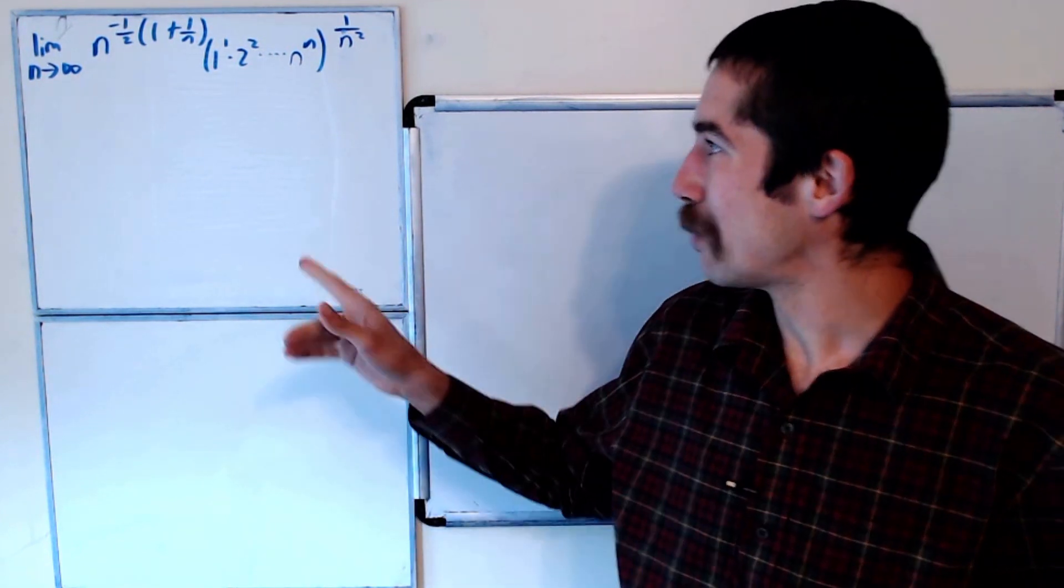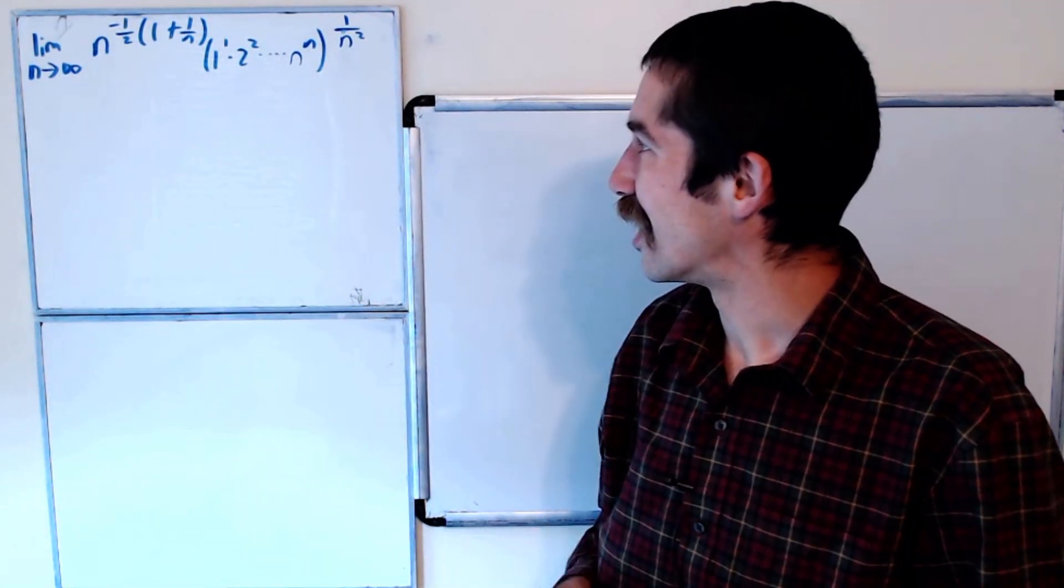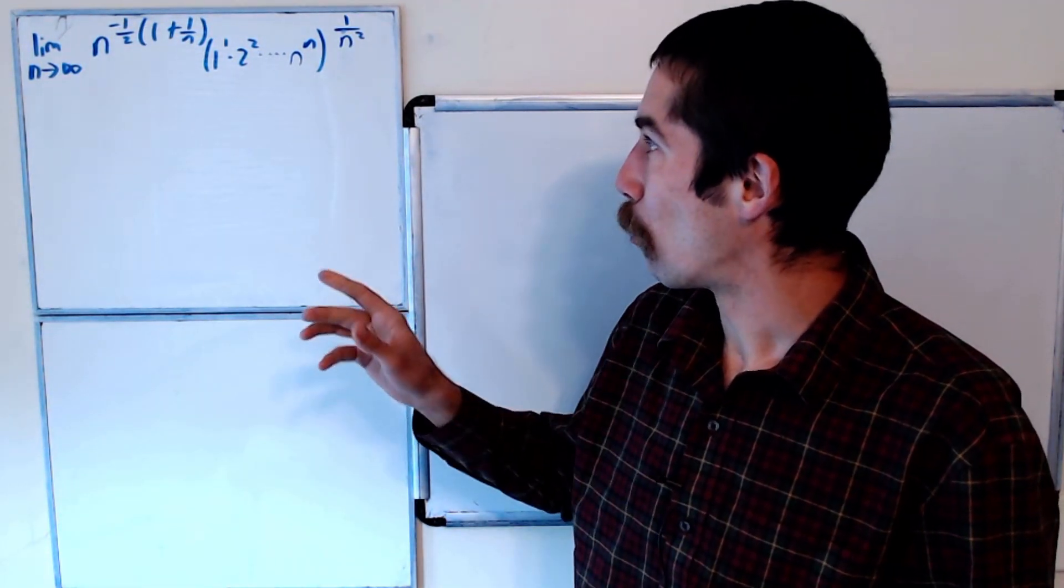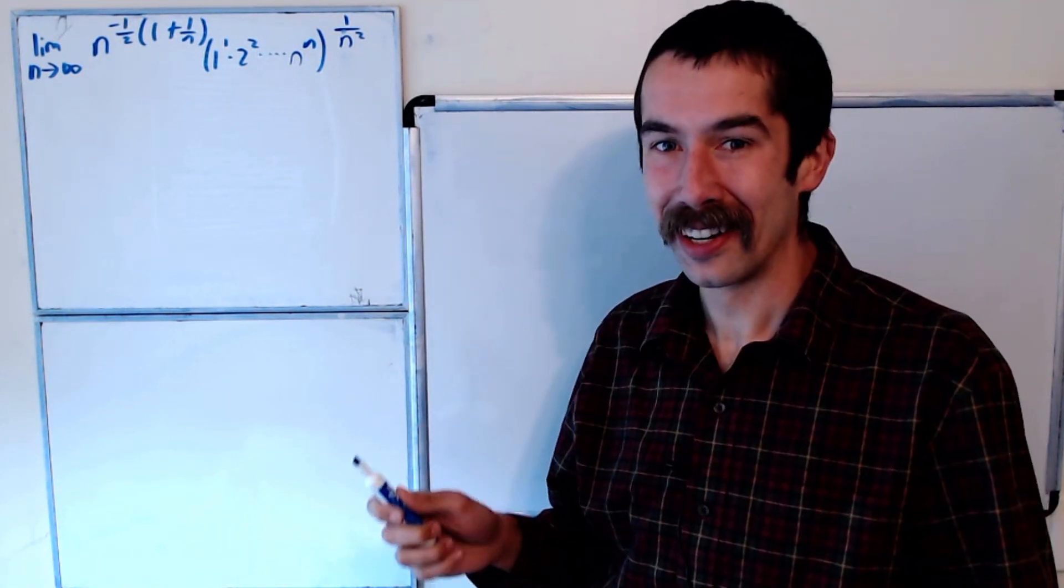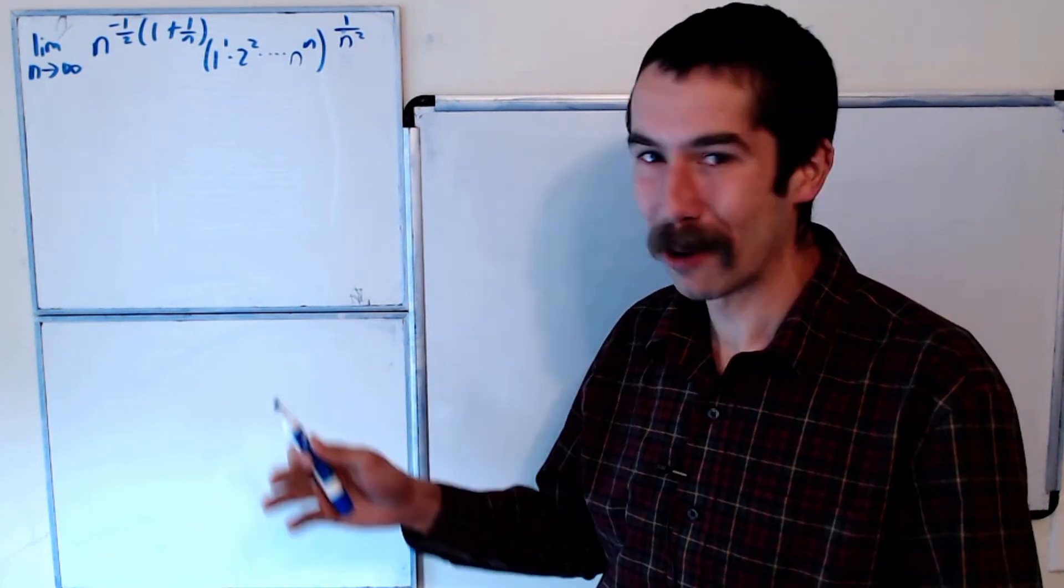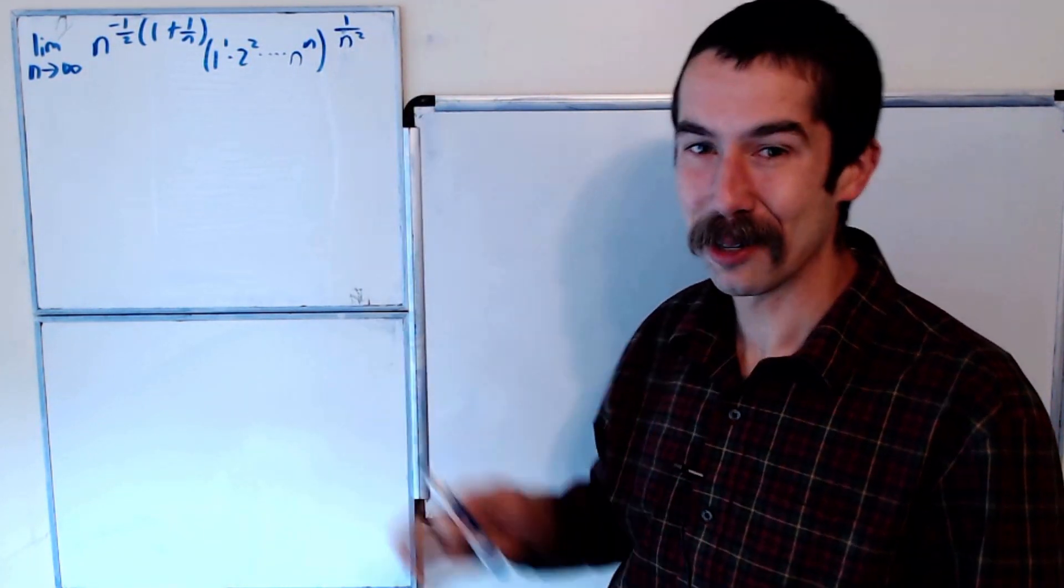Today we're going to evaluate the limit as n goes to infinity of n to the negative one half times one plus one over n, raised to a power, times one to the one times two to the two times all the way to n to the n, and that's raised to the one over n squared power.